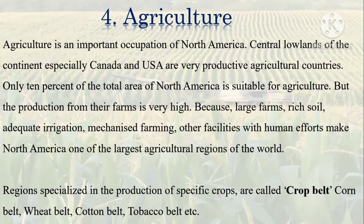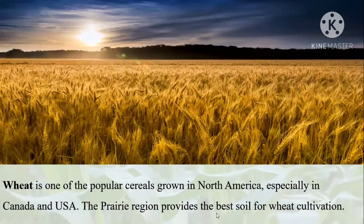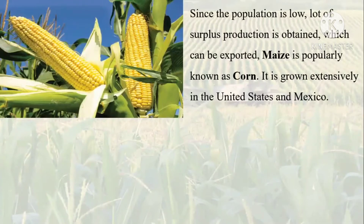Regions specialized in the production of specific crops are called crop belts: corn belt, wheat belt, cotton belt, and tobacco belt. Wheat is one of the popular cereals grown in North America, especially in Canada and USA. The prairie region provides the best soil for wheat cultivation. Since the population is low, a lot of surplus production is obtained which can be exported.